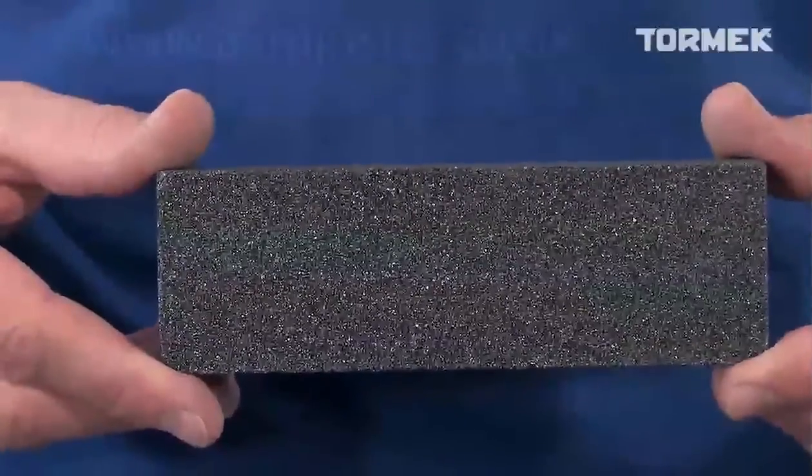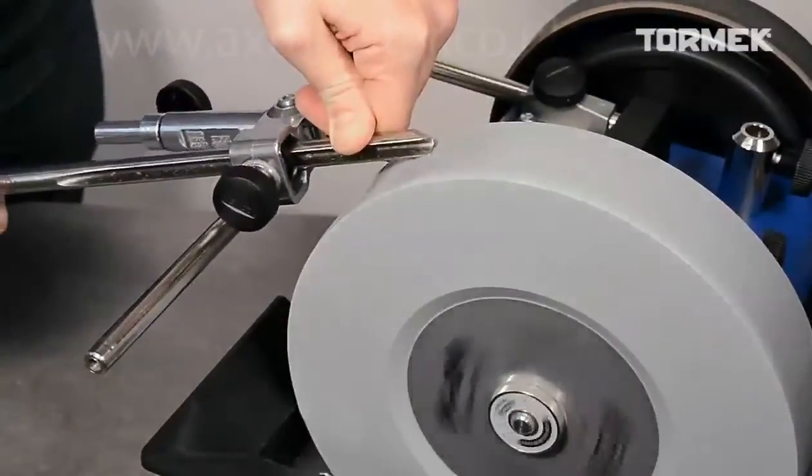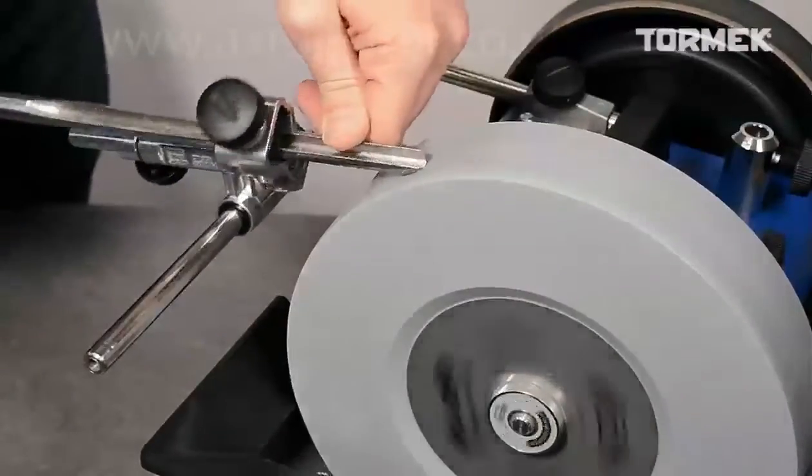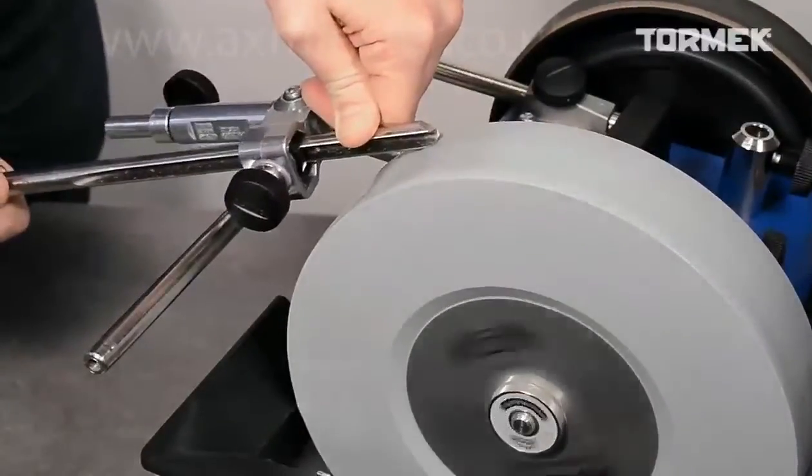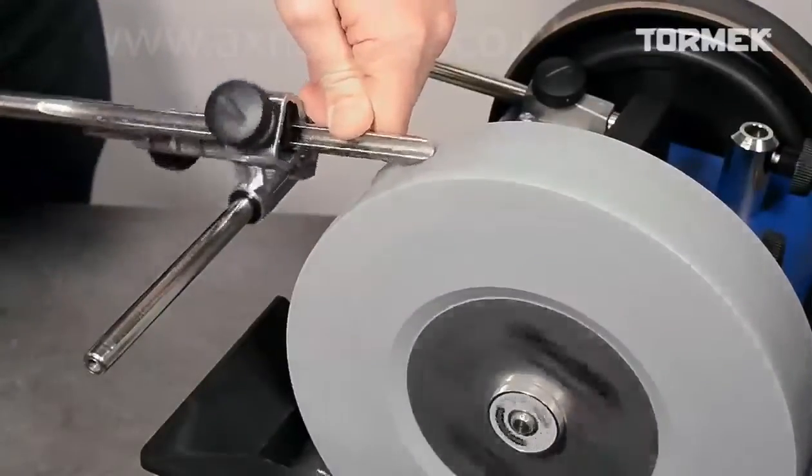If you need to remove a lot of steel, use the coarse side of the stone grader to make sure that you have a fresh cutting stone. Press harder against the stone and grind one wing at a time. Remember, this is a once-only job. Once you have the desired shape, the sharpening is very fast.